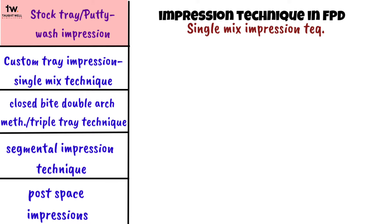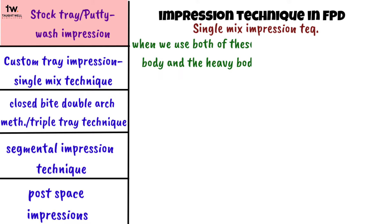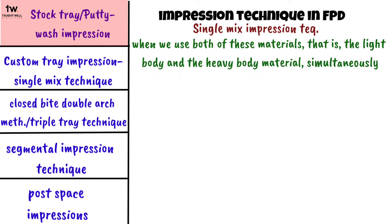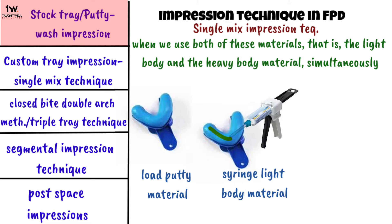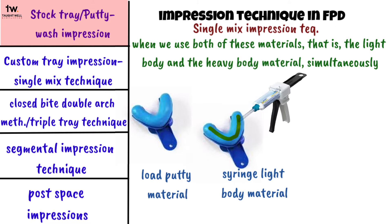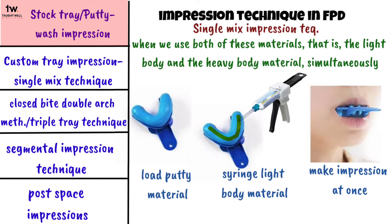Single mix is when we use both light body and heavy body materials simultaneously. We load the putty material into the tray and, instead of making a primary impression first, we directly syringe the light body material over the putty material and make the impression at once. This is the single mix putty wash impression technique.